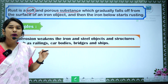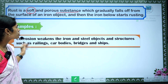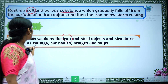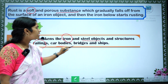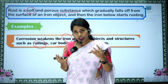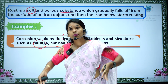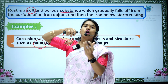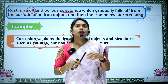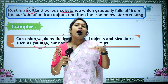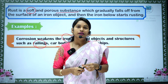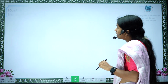Examples of corrosion: we mostly see it in iron and steel objects — railings, car bodies, bridges, and ships. The lower part of a ship is in contact with water for a long time, so rust forms there and that leads to loss of that iron.